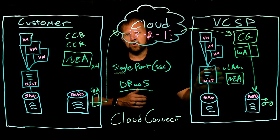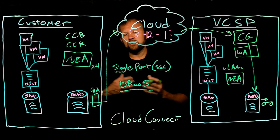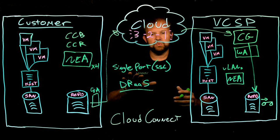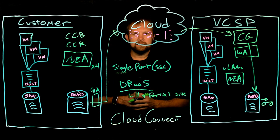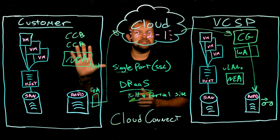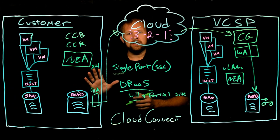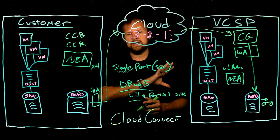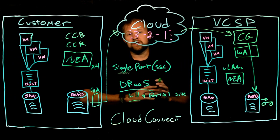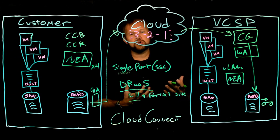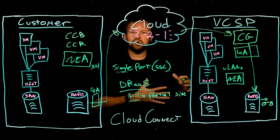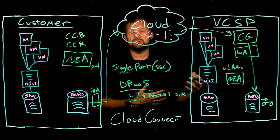For a full site failover — assuming the entire production data center is offline or has suffered a major outage — you can fail over everything you've replicated so your business continues within the provider's data center. There's a self-service portal accessible to you as a customer via the public internet, where you can trigger predefined failover plans that you've built ahead of time, controlling the order in which VMs come online.